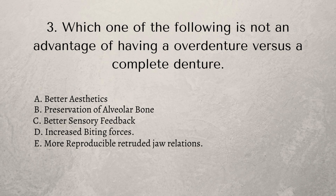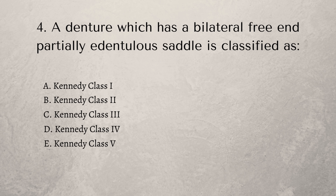Question three: which one of the following is not an advantage of having an over denture versus a complete denture? Options are better aesthetics, preservation of alveolar bone, better sensory feedback, increased biting forces, or more reproducible jaw relations. With an over denture you get more alveolar bone, sensory feedback, increased biting forces, and more reproducible jaw relations. The answer is probably A, better aesthetics — as both are dentures, the aesthetics are going to be similar either way.